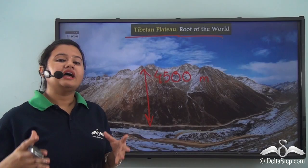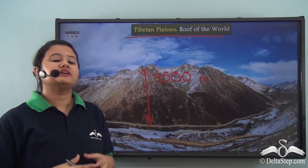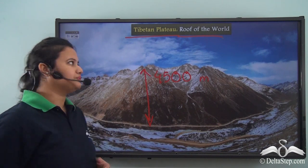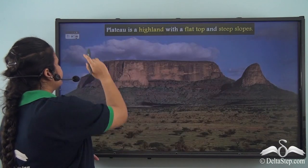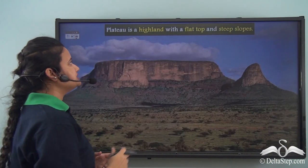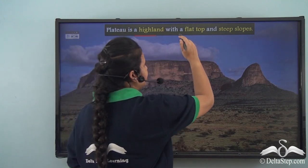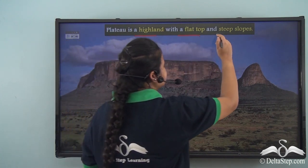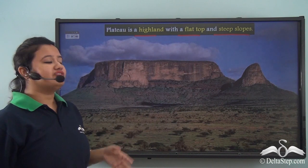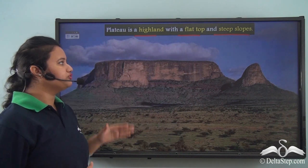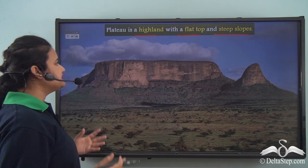Let us understand what type of landform a plateau is. A plateau is a highland with a flat top and steep slopes. Here we have a picture of a plateau, and we can see that this landform has a flat top and steep edges.